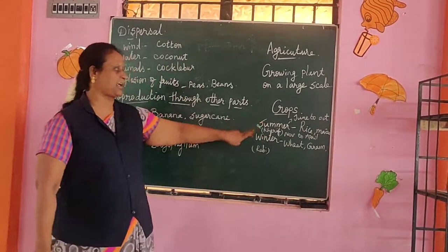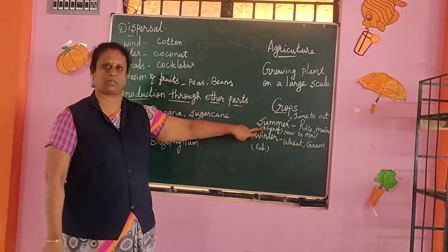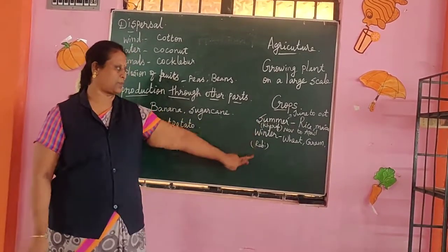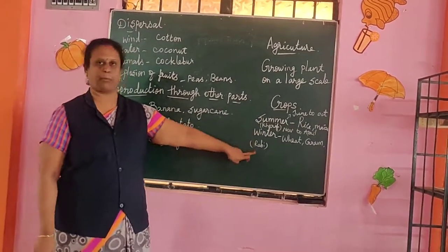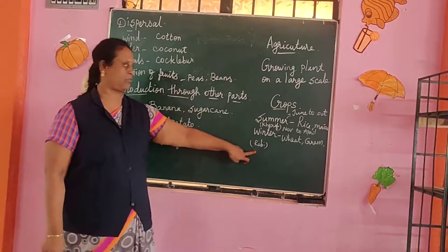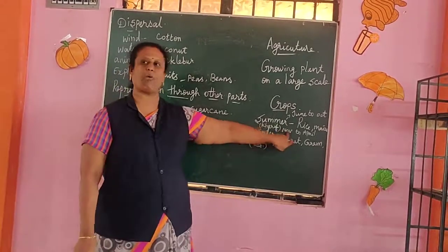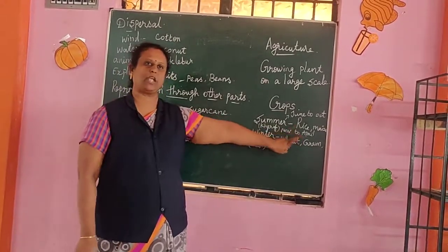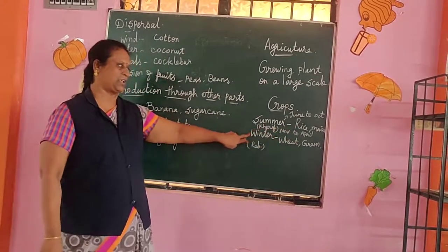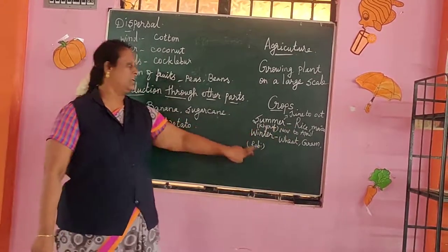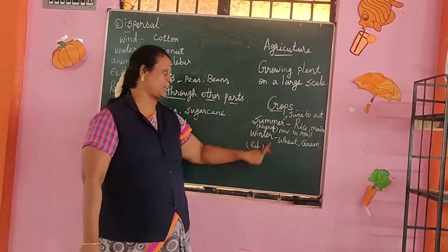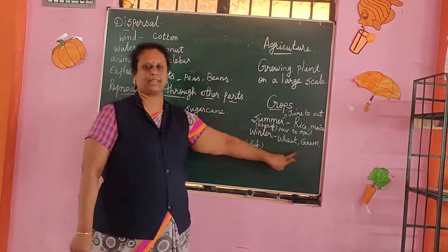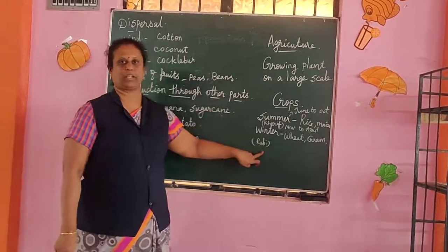Winter crops are also called Rabi crops. The winter crop season runs from November to April. Examples of winter crops include wheat and gram. Okay, students.